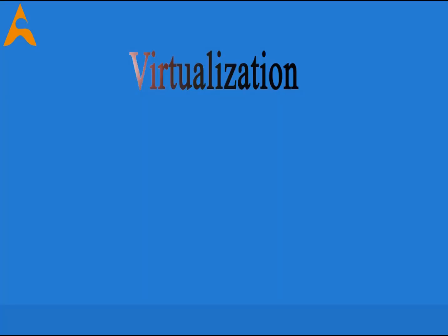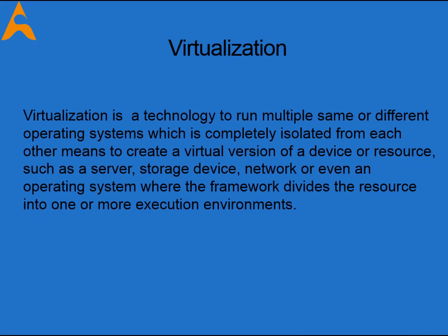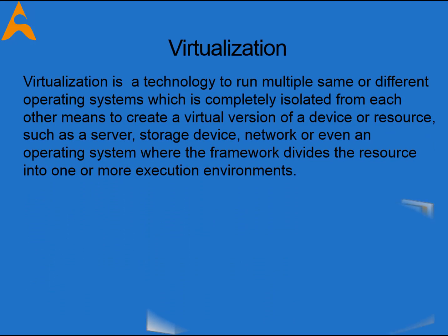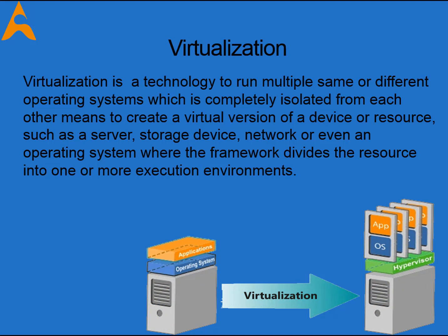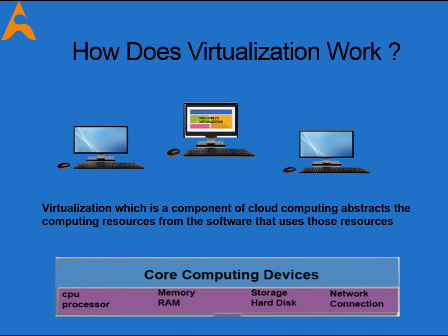Any discussion of cloud computing typically begins with virtualization. Virtualization is using computer resources to imitate other computer resources or whole computers. It separates resources and services from the underlying physical delivery environment. Essentially, virtual computing makes one physical computer act and perform like many computers. Every computer has four attributes: a processor, memory, storage, and a network connection. Virtual computing involves bringing together physical and logical resources, creating a virtual computing environment that consolidates the management and use of system resources. Virtualization allows you to separate the operating system from the underlying hardware.